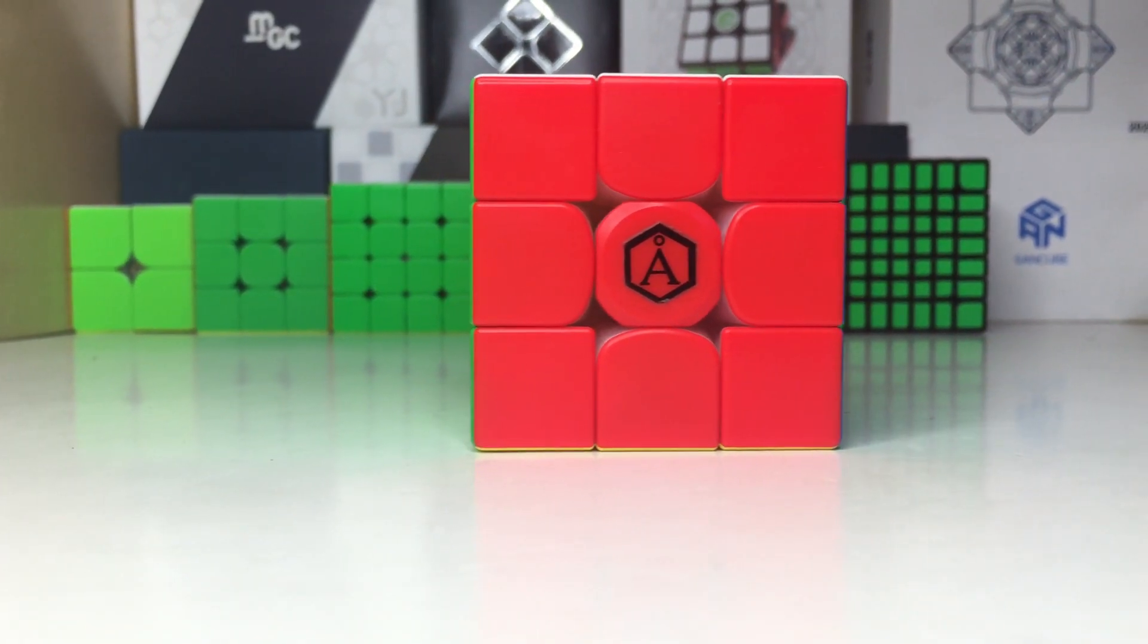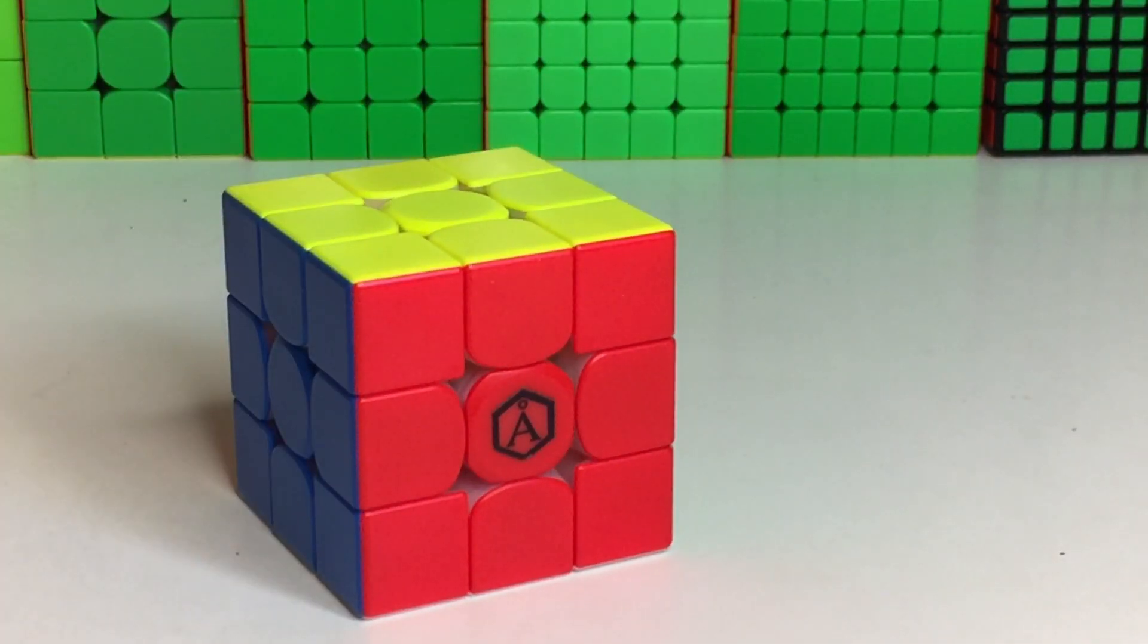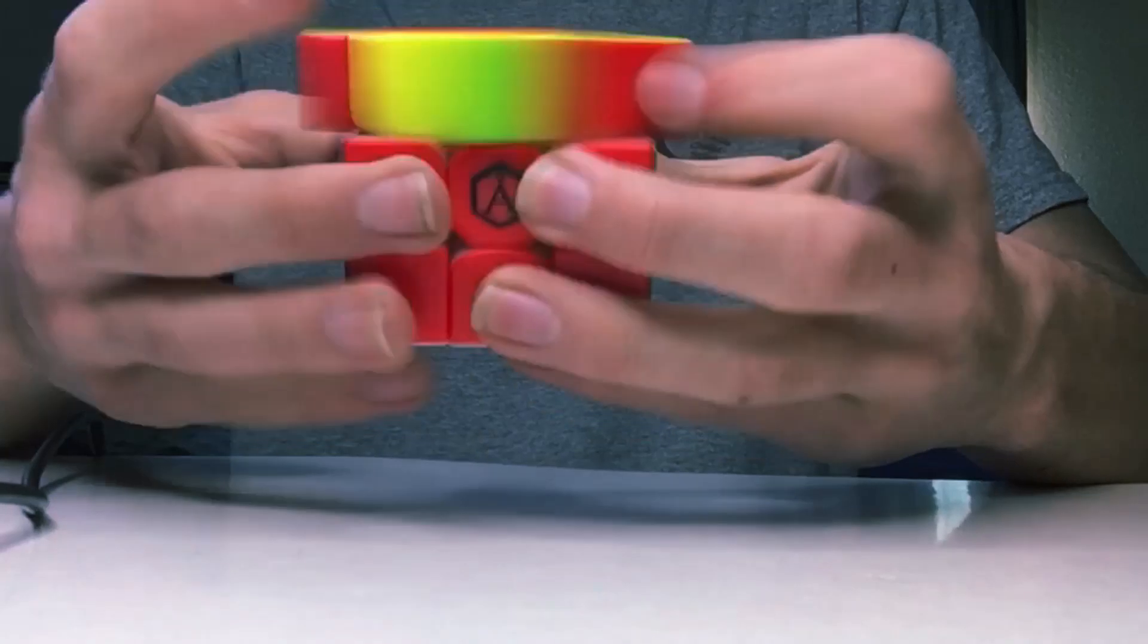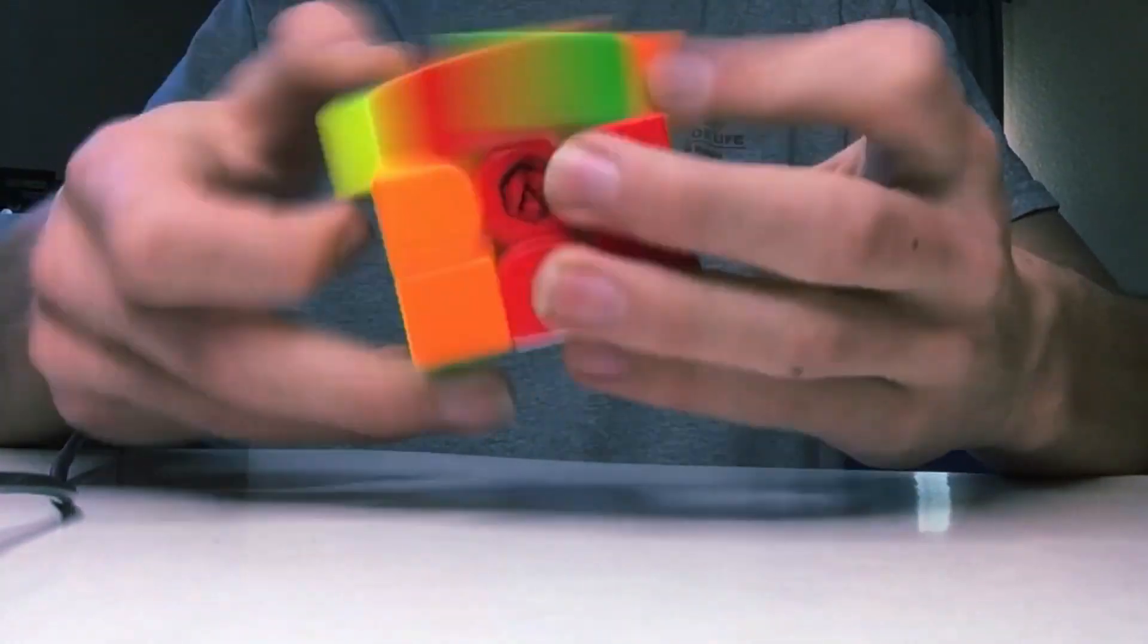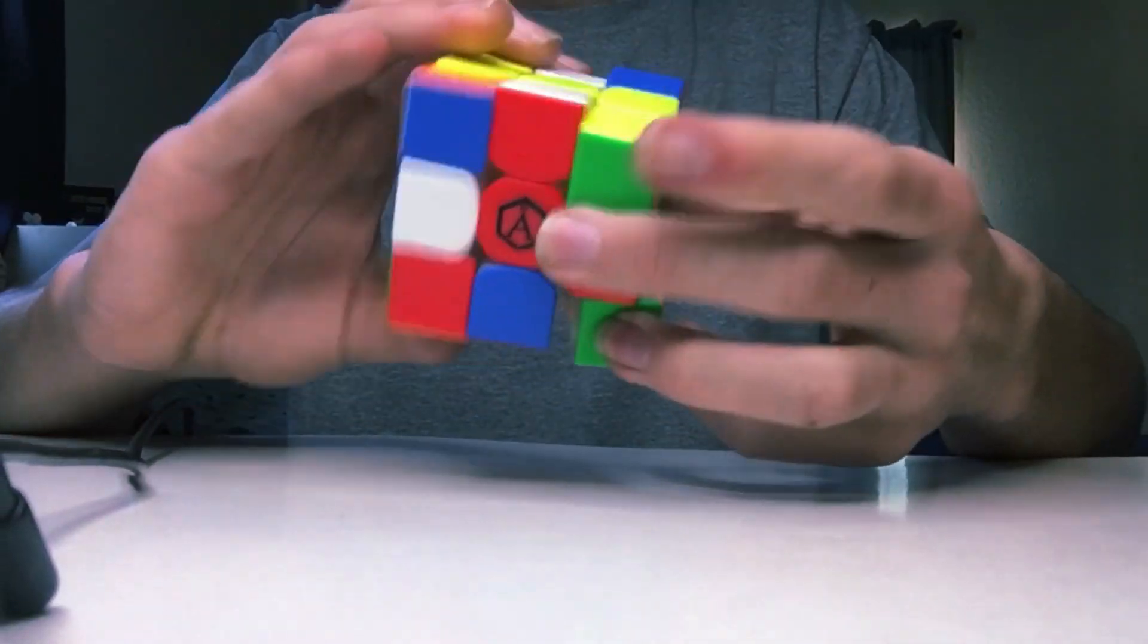Hey guys, today we're going to be taking a look at the Angstrom GAN 11M Pro. This is currently one of the most expensive 3x3 speed cubes you can buy, and it's no secret that this cube has very high performance. While it may be a high performing speed cube, is it worth the high price tag? Let's find out.